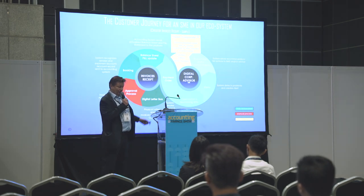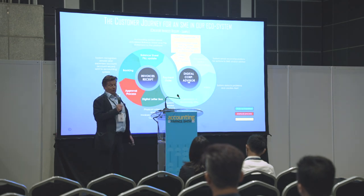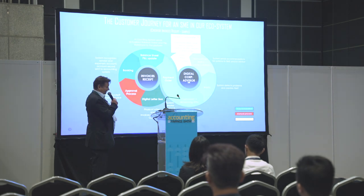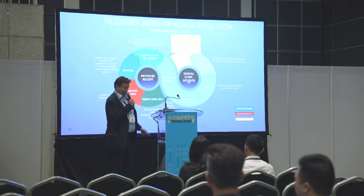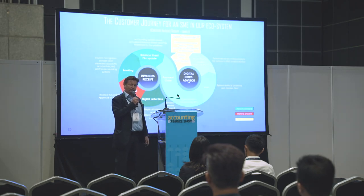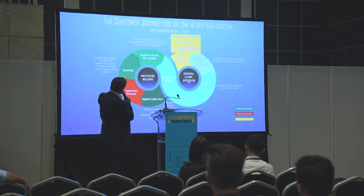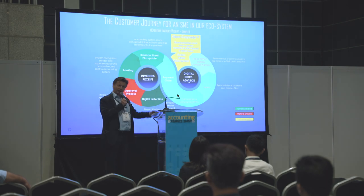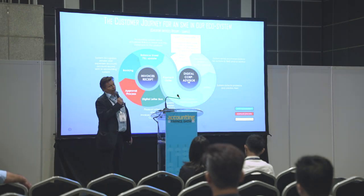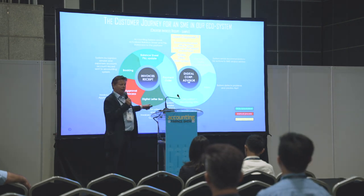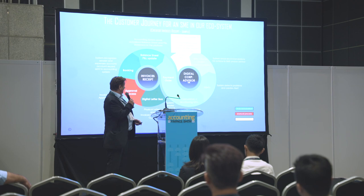From there on we generate the account record and send it to the accounting system, which is connected — that could be QuickBooks, it could be Xero, it could be Sage, it doesn't matter for us. The accounting system will then update the balance sheet and profit and loss statement, which we reflect again in our platform as a balance sheet and P&L, and then we automatically generate a payment order.